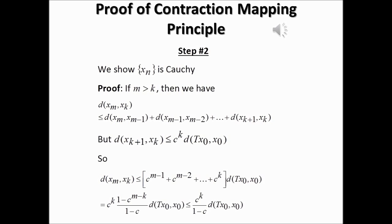If you apply the triangle inequality to the second term, then the distance between the n minus one term and the k-th term is less than or equal to the distance between the n minus one term and the n minus two term, plus the distance between the n minus two term and the k-th term. By repeated application of the triangle inequality, the distance between the n-th term and the k-th term is less than or equal to the distance between the n-th and n minus one terms, plus the distance between the n minus one and n minus two terms, continuing down to the distance between the k plus one term and the k-th term.